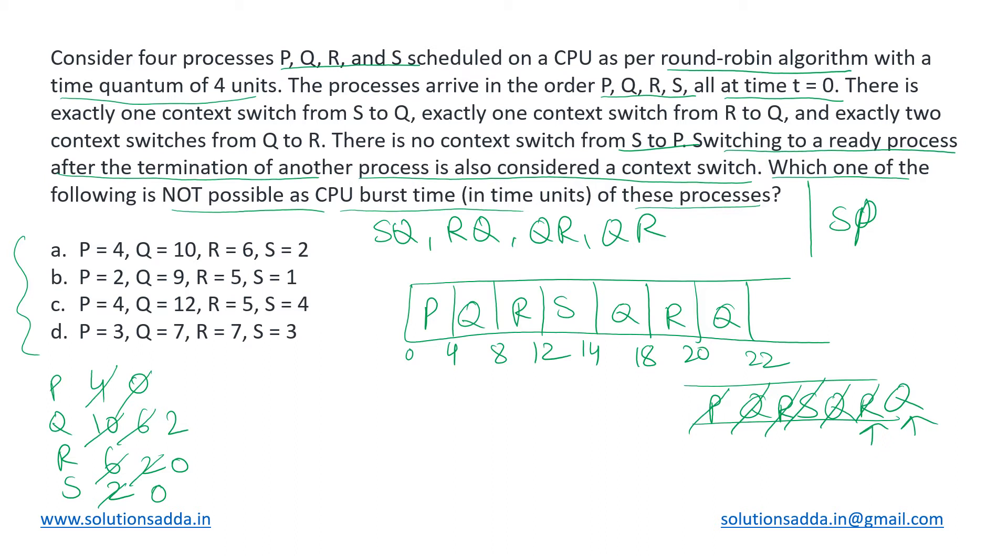SQ, yes it is followed over here. The second one which is RQ, it is followed. Then QR followed and one more QR followed over here. And this one is SP. We do not have any transition like SP. Basically all the four constraints are followed and hence this is a correct combination of burst times we can have for these processes.